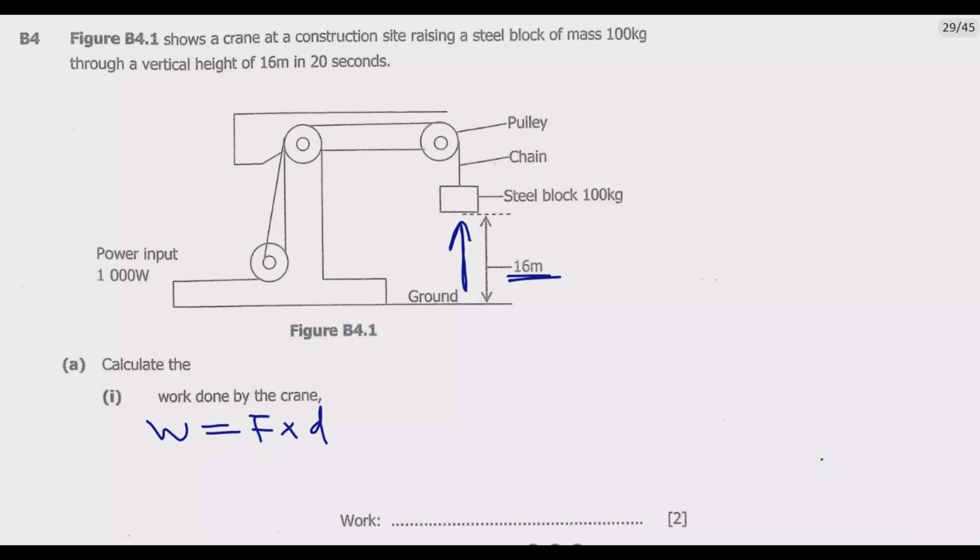We know that force equals mass times acceleration. In this case, it will be gravity, then multiply by height because it's vertical. So work done equals mass: 100 kg, multiply by gravity which is 10 newtons per kg, then multiply by the height which is 16 meters.